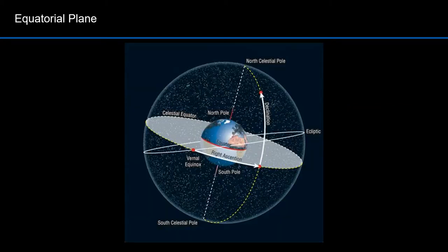Astronomers use a celestial sphere to determine the position of things in space relative to our perspective on Earth. The celestial sphere is an imaginary sphere of arbitrarily large radius concentric with the Earth, meaning the center of the sphere is the center of the Earth. All objects in the observer's sky can be thought of as projected upon the inside surface of a sphere, as if it were the underside of a dome or a hemispherical screen. This is a very Earth-centric view, but we're talking about a coordinate system that enables observers on Earth to locate things. It doesn't help us understand the physics or dynamics of things moving in space.